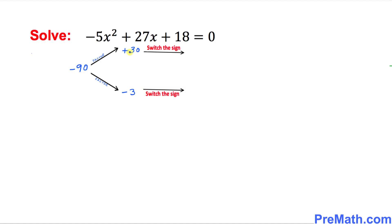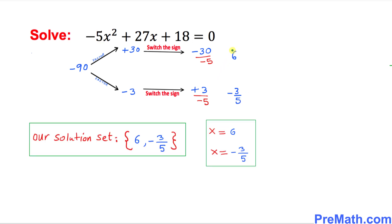Now we are going to switch the sign of these factors. Positive 30 becomes negative 30, and negative 3 becomes positive 3. Our final step is to look at the leading coefficient, which is negative 5, and divide both numbers by it. Simplifying: negative 30 over negative 5 gives us 6, and positive 3 over negative 5 gives us negative 3 fifths. Our solution set is positive 6 and negative 3 fifths. Both notations are acceptable.